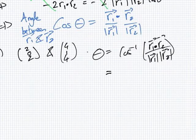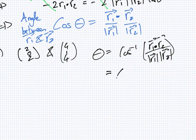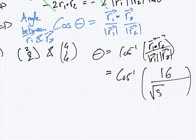Let's have a look. So this is cos inverse. On the top would be 8 plus 0 plus 8, so 16. And the bottom is the square root of 8 times the square root of 33. So what did you get? Ten degrees. Yeah. Okay.